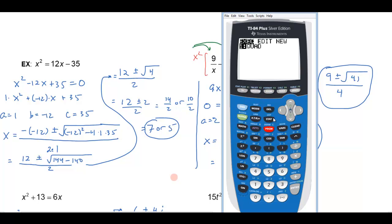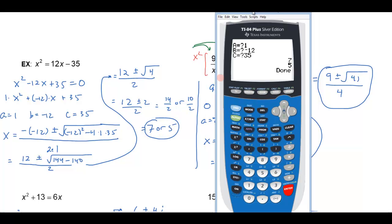So I'm going to hit my program button now, and there's that quad program that I just entered in there, and I want to execute this, so I'm going to hit enter, and it pastes it to my home screen, I'm going to hit enter again, and now it's executing it, and it says, what's A? Well in this case, A is 1, and B was negative 12, and C was 35. Remember you have to write your quadratic equation in standard form. And sure enough, fast as lightning, here comes my answer, 7 and 5.